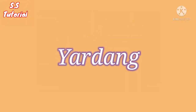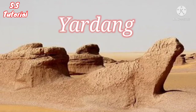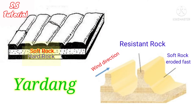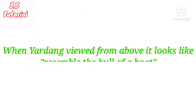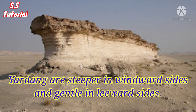Yardangs are nothing but larger hill-size features sculpted by wind erosion. In desert areas, when hard and soft rocks lie parallel to each other, due to strong wind the soft rocks erode first, then the hard rock. The loose fragments of rock are transported from that place to another, and a streamlined protuberance carved form is created, which is known as a Yardang. When a Yardang is viewed from above, it resembles the hull of a boat. Yardangs are steeper on the windward side and get narrower and lower toward the leeward side.